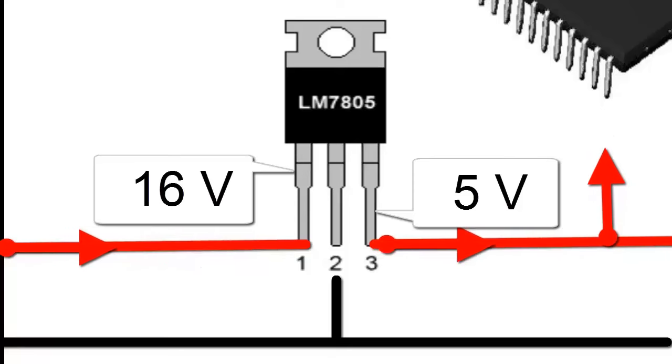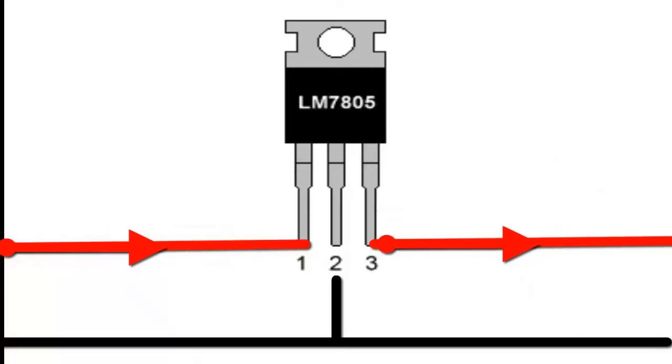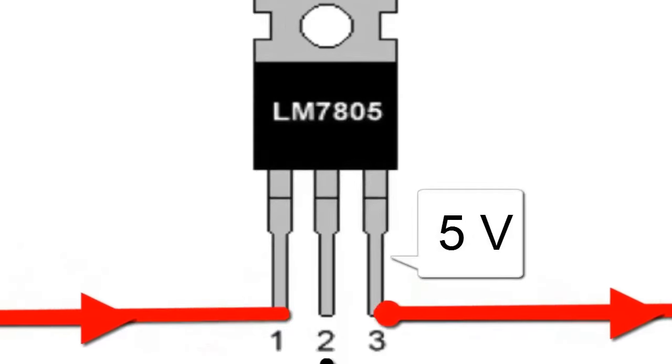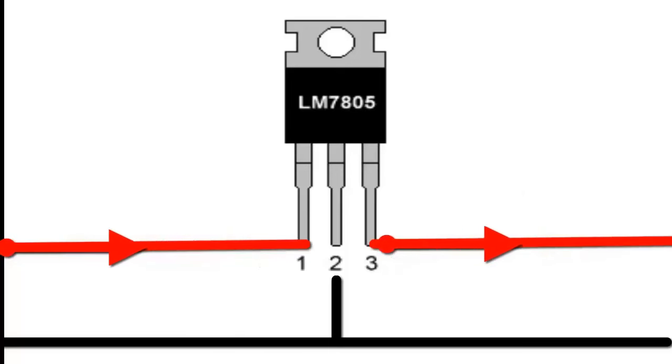The last two numbers of the regulator indicate the output value of the regulator. Hence, the 7805 regulator delivers 5 volts at the output. The input voltage can range from 7 volts to 32 volts.